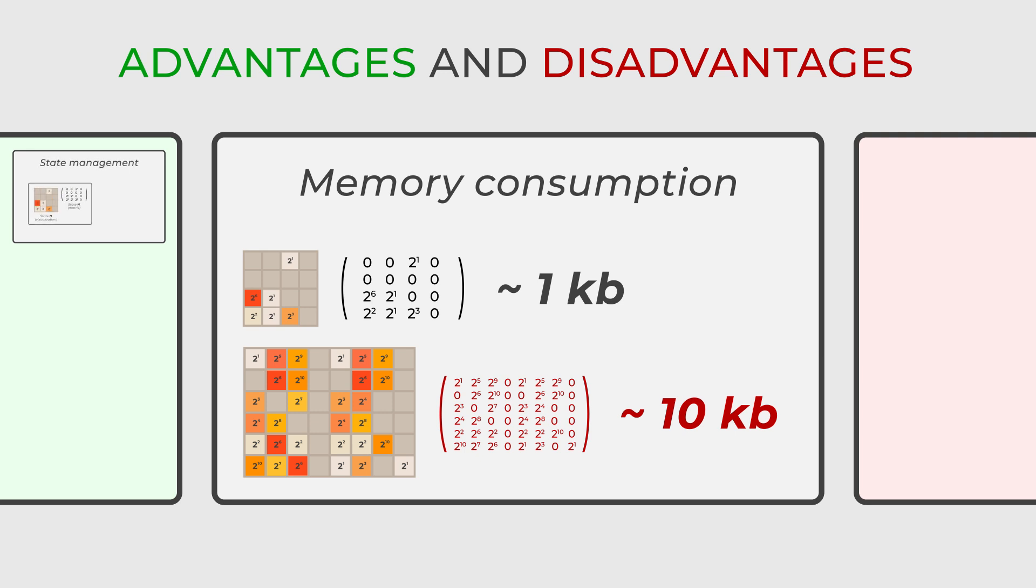Nonetheless, it is worth noting that there are memory optimization strategies that can mitigate this issue. For instance, in our example, there is a clever optimization technique that allows the entire state of a game to be stored in a single 64-bit number.